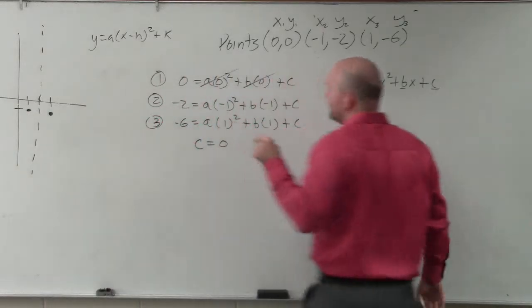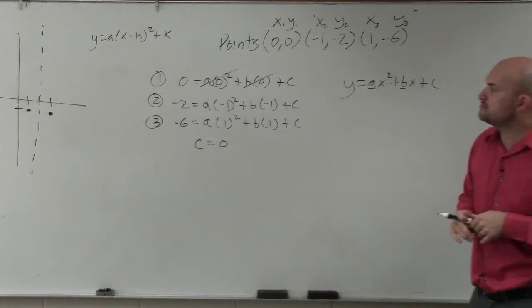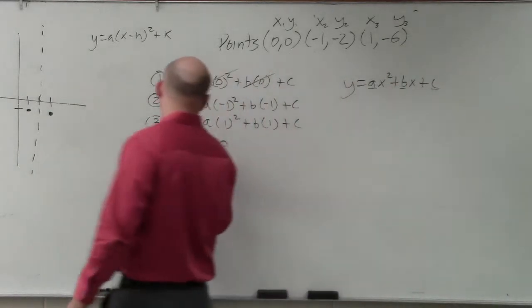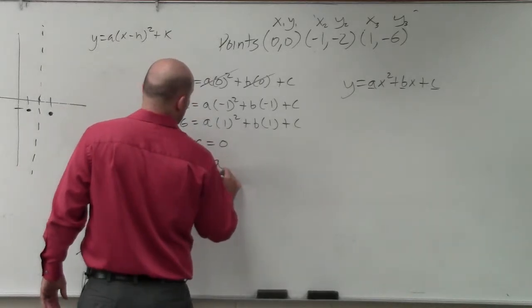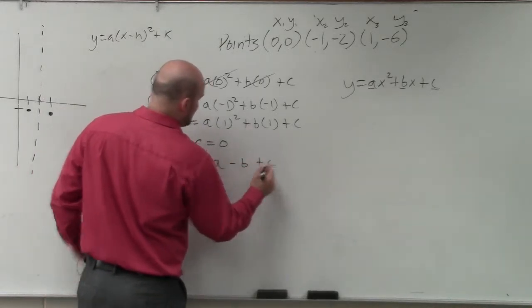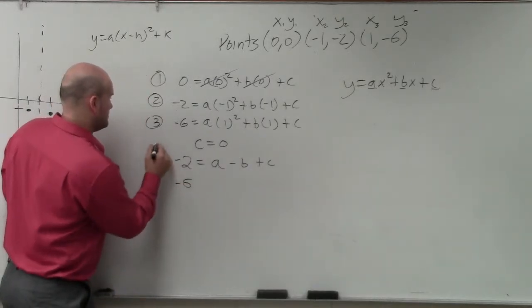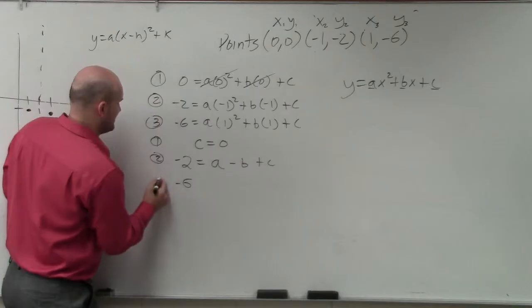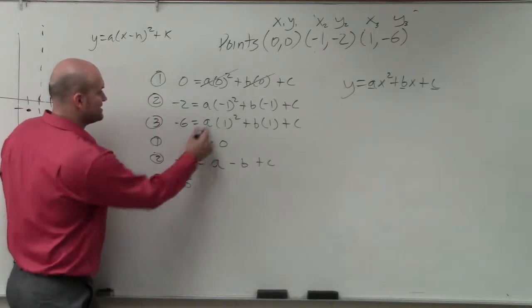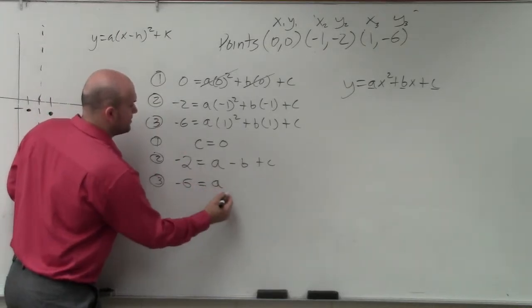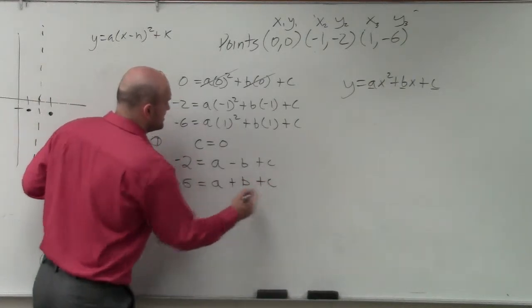If we simplify this, we have negative 1 squared is 1, so that becomes negative 2 equals a minus b plus c. Then over here I have negative 6. I'm just simplifying these equations. Negative 6, that becomes 1 equals a plus 1b plus c.